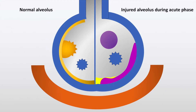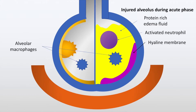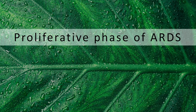On your right is the injured alveolus during the acute phase. The alveolus fills up with a proteinaceous fluid during the acute phase. The cells shown herein include the activated neutrophil, the hyaline membrane that is formed, and the alveolar macrophages as already discussed.